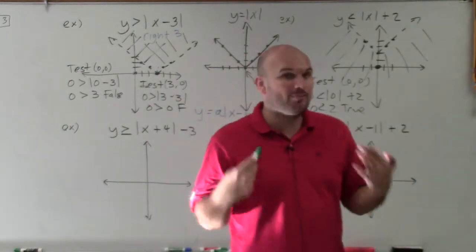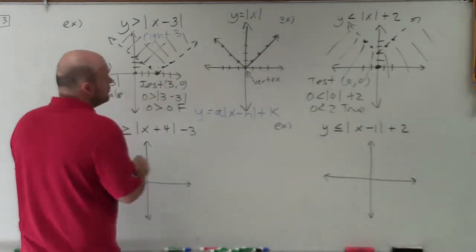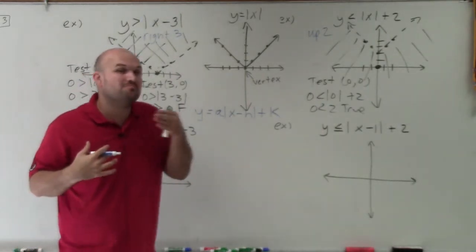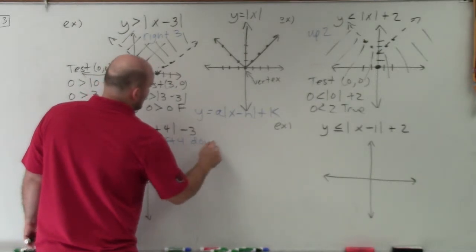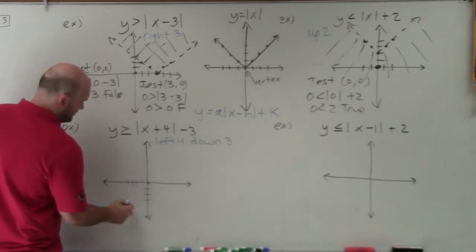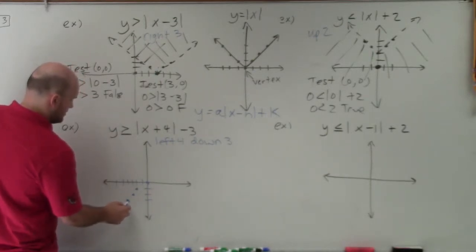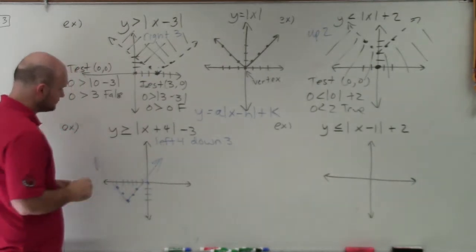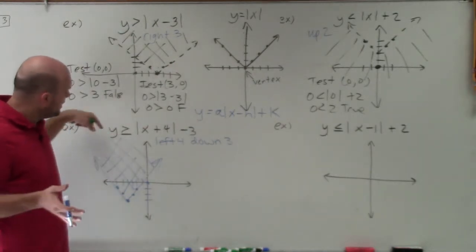For the third example, I'm reviewing the transformations again. I have absolute value of x plus 4, minus 3. The x plus 4 can be rewritten as x minus negative 4, so h equals negative 4 — that's a shift left 4. Then down 3 from k. So my vertex starts at (0, 0), goes left 4, then down 3 to (negative 4, negative 3). From there I graph the V: over 1, up 1, in both directions. Since it's greater than or equal to, this is a solid graph, and since it's greater than, the shading is above this boundary line.